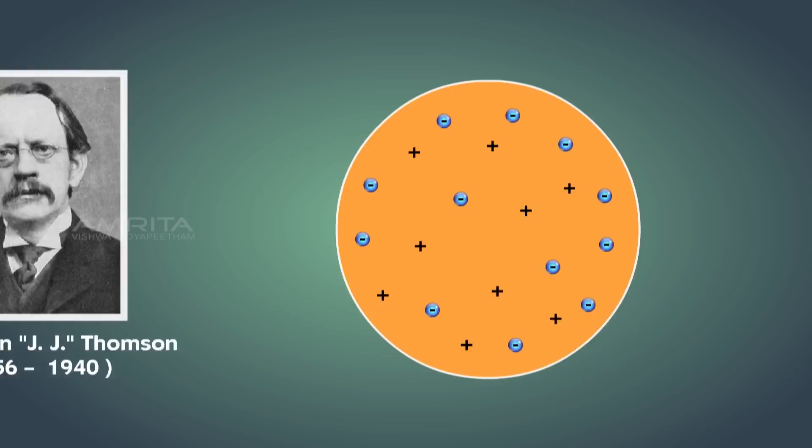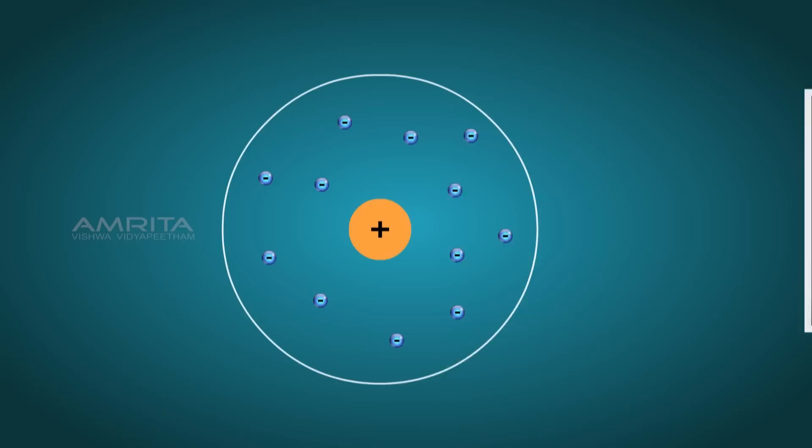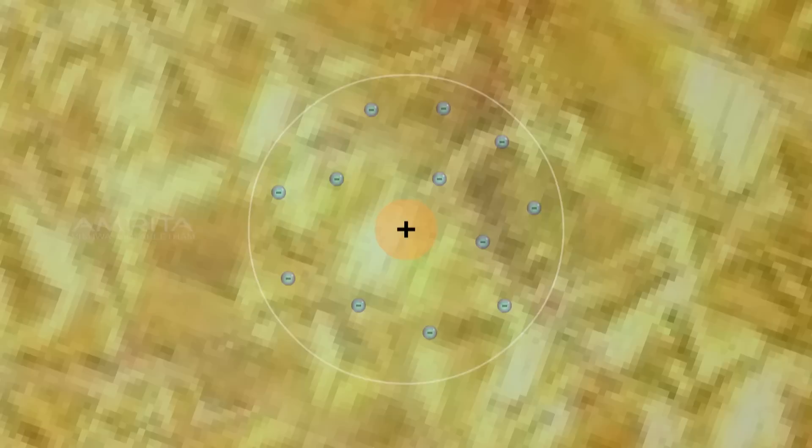Significant research work on the atom model was done by British physicist and chemist Ernest Rutherford. Ernest Rutherford was interested in knowing how electrons are arranged within an atom.